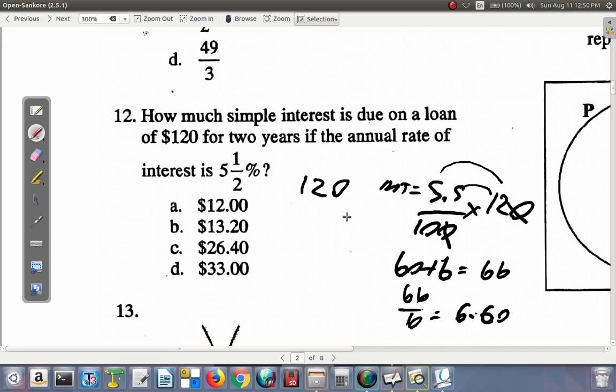For 1 year, it's simple interest, so it's the same money for the 2nd year. For 2 years, it's 6.6 plus 6.6, which is $13.20. So $13.20, 12 is B.